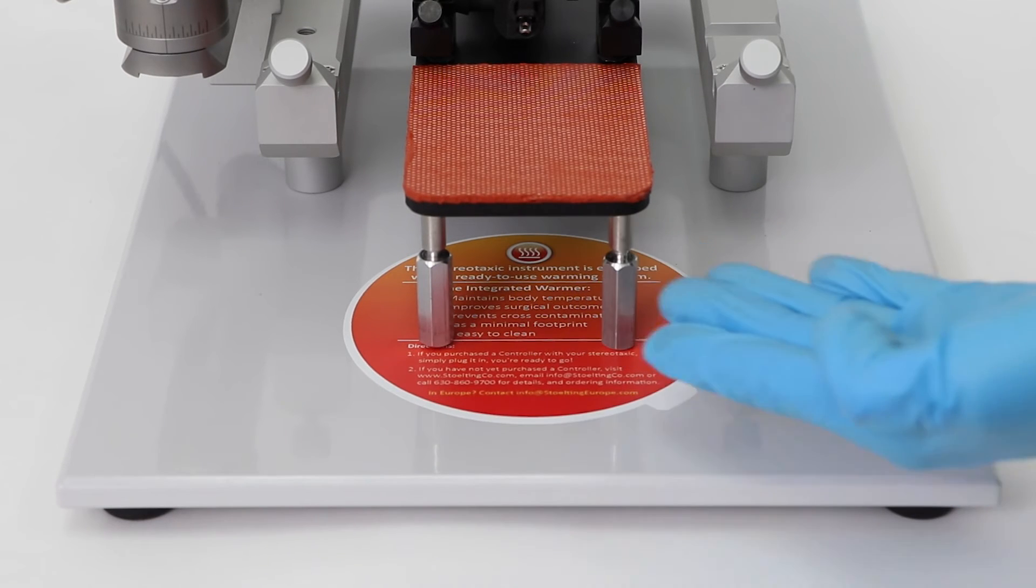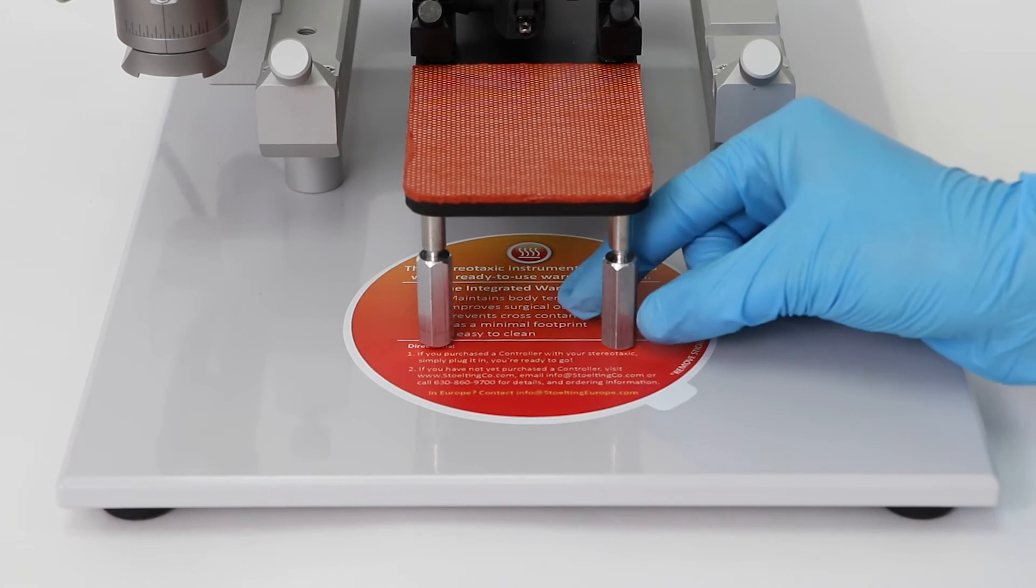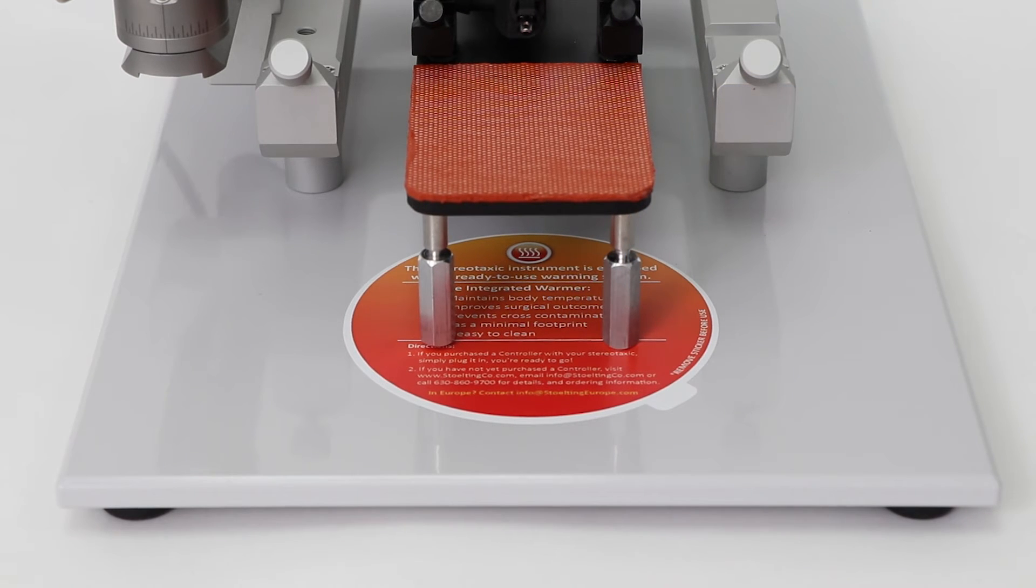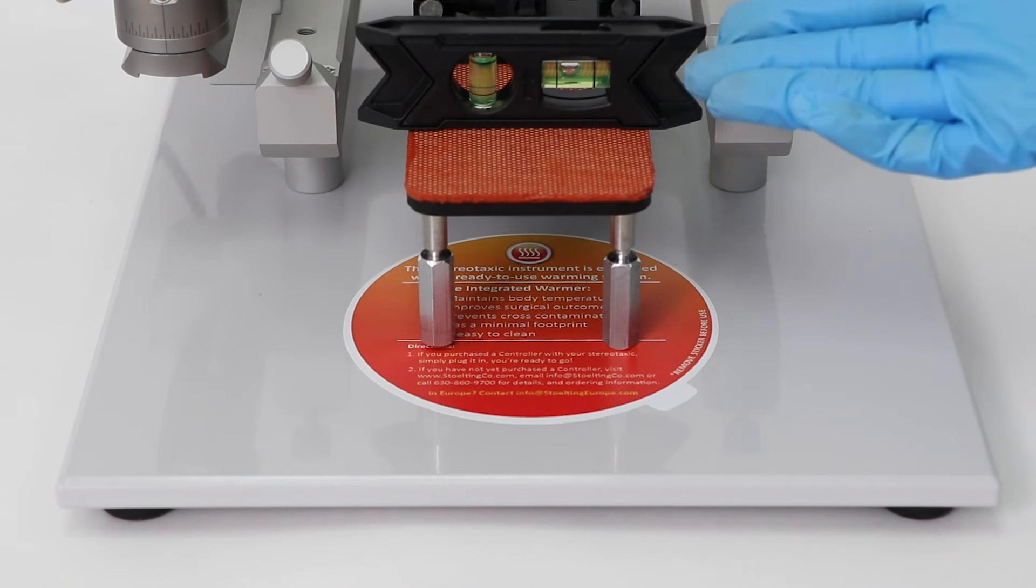Be sure to adjust the warming plate footing to be in contact with the stereotaxic base. To do so, turn the pegs counterclockwise. Make sure the base is level once you complete this step.